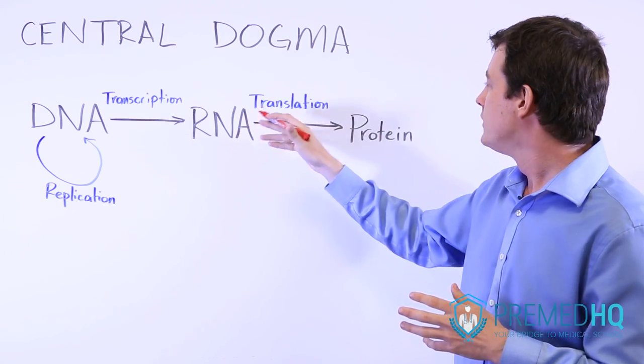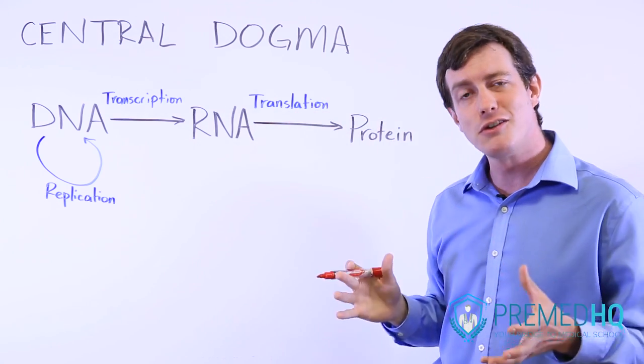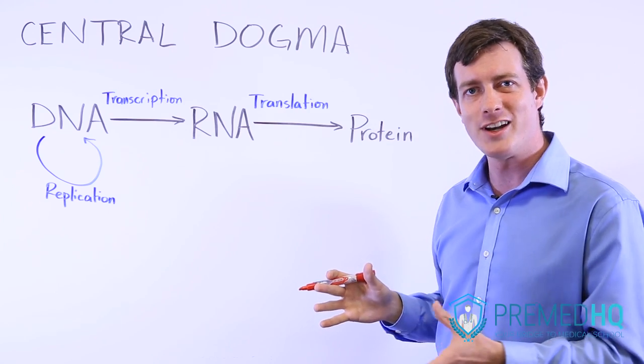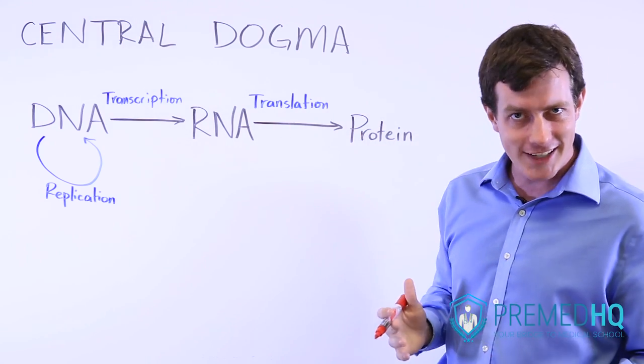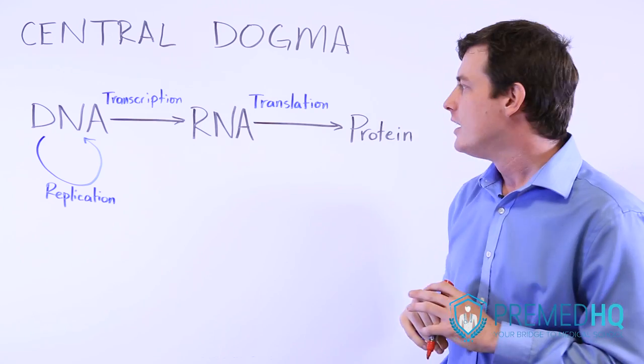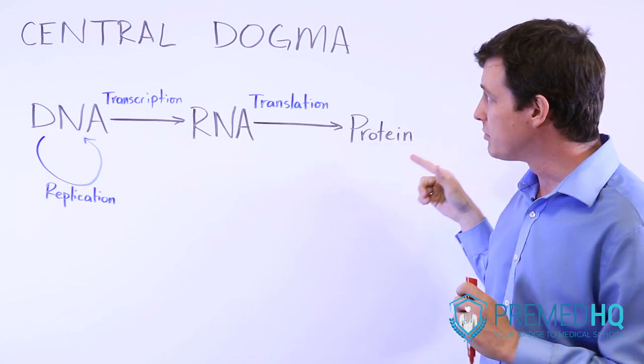And it can be translated into proteins in ribosomes, which are themselves made out of ribosomal RNA. And then this will help you understand the endoplasmic reticulum and the various pieces that go into the translation of RNA into protein.